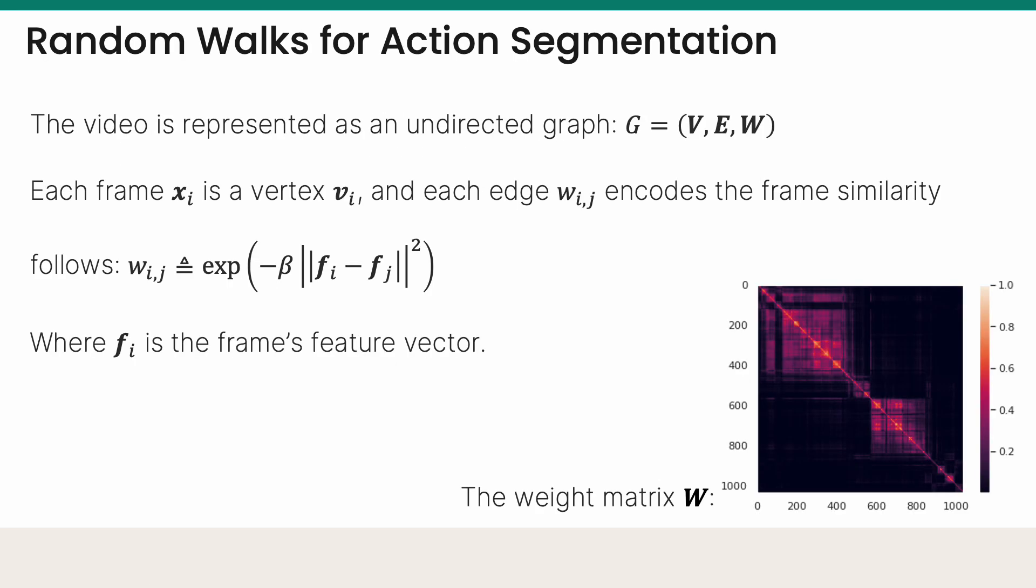At first, we represent a sequence of frames as an undirected graph. Each frame, xi, is a vertex. Each edge connects two frames, and its weight is correlated to the two frames' similarity score.